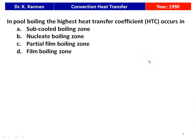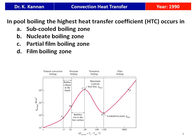The next question: in pool boiling, the highest heat transfer coefficient occurs in — sub-cooled boiling region, nucleate boiling zone, partial film boiling zone, or film boiling zone. The boiling curve shows natural convection boiling, nucleate boiling, transition boiling, and film boiling. The highest heat transfer coefficient occurs in the nucleate boiling zone.